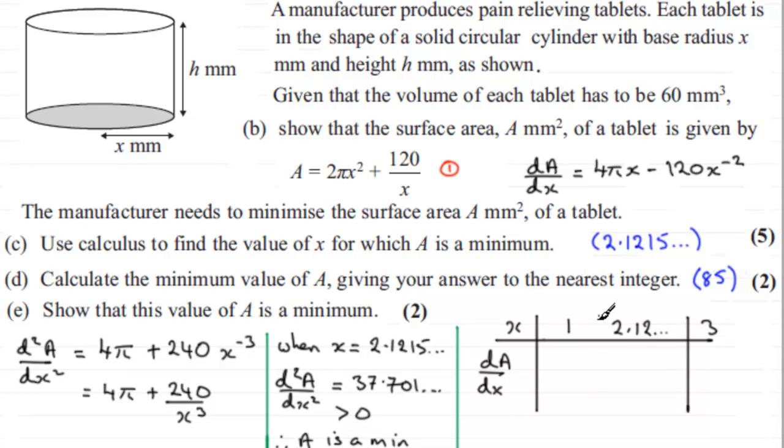Now, when x is 1, if we substitute x is 1 into here, we've got 4π times 1, 4π minus 120 divided by 1 squared. Remember, x^(-2) is 1 over x squared. Well, if you work that out, what you get is a negative number. You get minus 107 and other stuff.